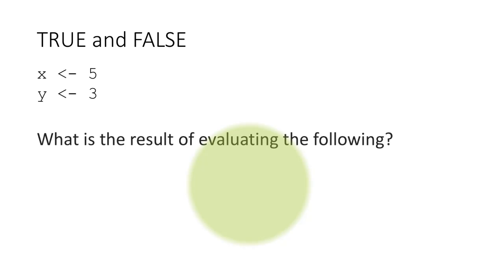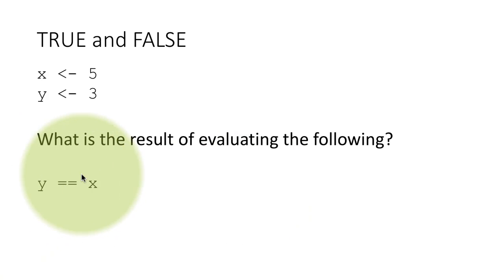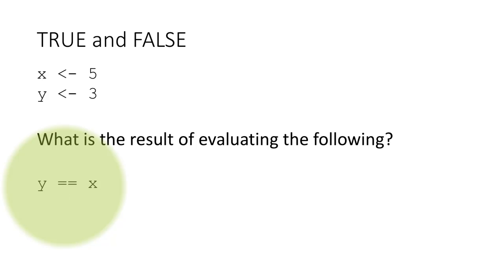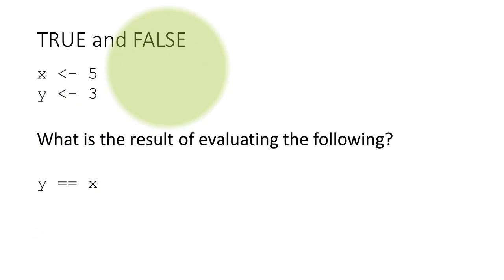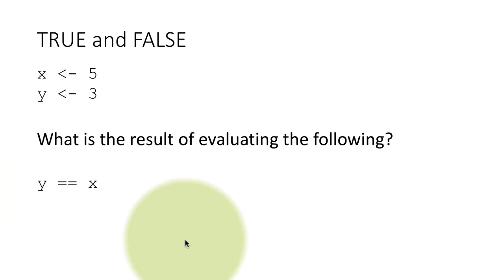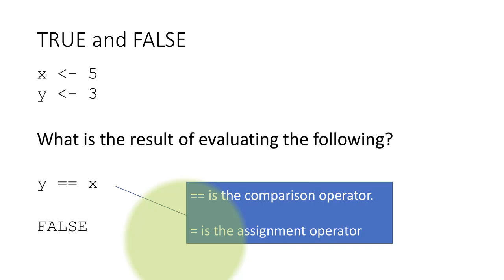Let's do the same thing again. x is 5, y is 3, and then we evaluate the expression y double equals x — that is, we are saying is y equal to x? This is the comparison operator: two equal signs. The single equal sign is not a comparison operator because the single equal sign is our assignment operator. So if we just wrote y equals x, that would mean assigning the value of x to the variable y. We are comparing the two of them to see whether they are equal or not. In this case the result is false because they are not equal — one is 3, the other is 5. So double equals is the comparison operator; single equals is the assignment operator.